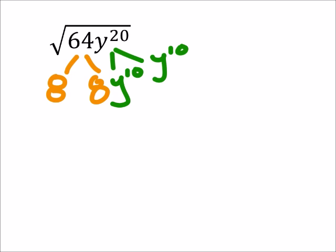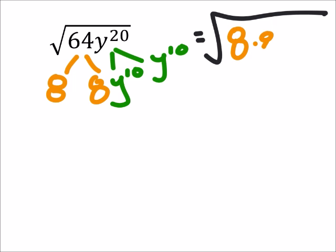So I can rewrite this as the square root of 8 times 8 times y to the power of 10 times y to the power of 10.